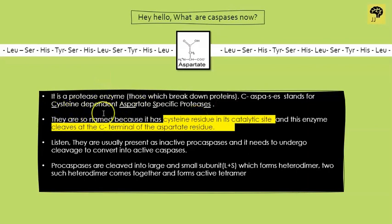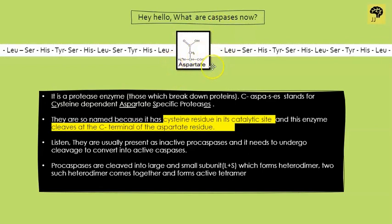Don't worry about memorizing the full form — let's break it down. All enzymes have a catalytic unit. In caspase, cysteine — an amino acid — is present at the catalytic unit, making it cysteine-dependent. Second, it is aspartate-specific: caspase searches for aspartate residues and cleaves at their C-terminal, not the N-terminal. The N-terminal is the amino terminal and the C-terminal is the carboxyl terminal. That is why it is called an aspartate-specific protease.